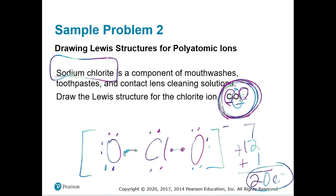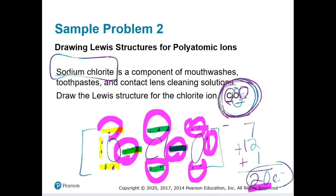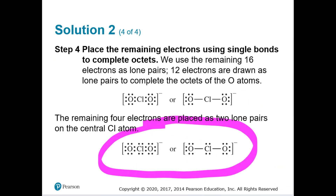Now verify that everyone has eight electrons. Counting around each oxygen: two, four, six, eight — happy. Counting around chlorine: two, four, six, eight — happy. And the other oxygen: two, four, six, eight — happy too. Double-checking we have 20 electrons total: two, four, six, eight, ten, twelve, fourteen, sixteen, eighteen, twenty. There we go — this is what our compound should look like.